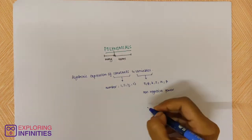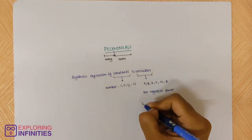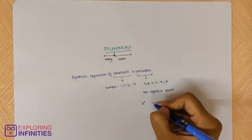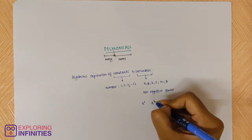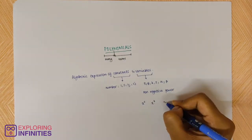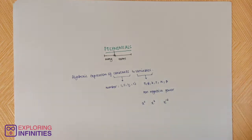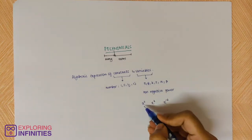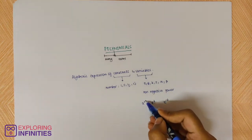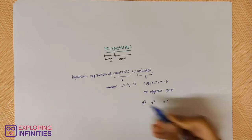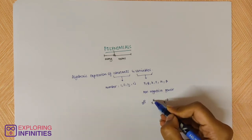Let me take an example. In an expression you have x squared; in another you have x cubed; and in another you have x to the power minus 2. We look at each and every power of x. The power of x here is 2, and over here is 3.